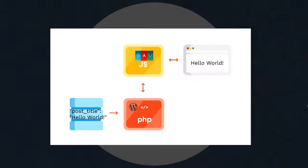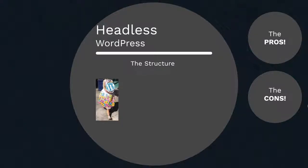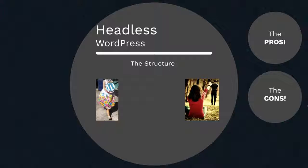It sounds simple, right? Basically, you are now separating the front end — the main web application — from WordPress. You now have two working applications. There are two types of structure you can use when building a headless WordPress. Any idea what the two structures are based on the pictures? The first picture shows a headless ghost costume — that's Halloween, trick or treat — so the first structure is the word itself: headless WordPress.